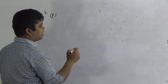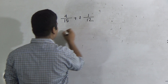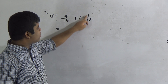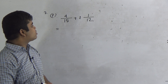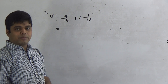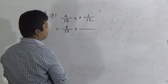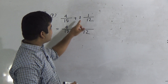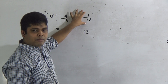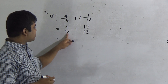Question number 7: we write the question here — 4/15 plus 1 and 1/12. Dear student, notice that 4/15 is a proper fraction, while 1 and 1/12 is a mixed fraction. So when we want to do addition, first of all we convert the mixed fraction into an improper fraction. So we write 4/15. The denominator stays the same; we multiply the integer 1 by the denominator 12 — giving 12 — and then add the numerator 1. So 12 plus 1 gives 13. We write 13/12. Now notice: 4/15 plus 13/12.